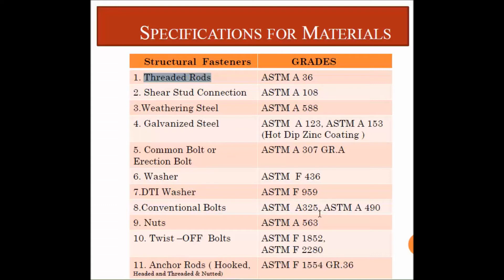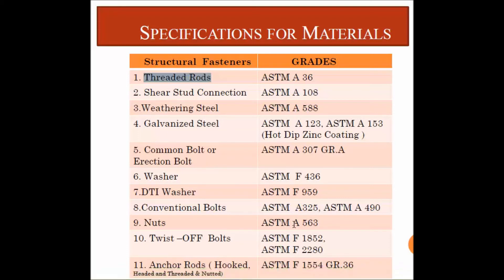For conventional bolts we also use ASTM A490. For nuts, we use ASTM A563. For twist-off bolts, we use ASTM F1852 and ASTM F2280. For anchor rods — whether hooked, headed, or threaded and nutted — we use ASTM F554 Grade 36.